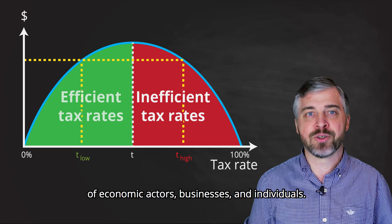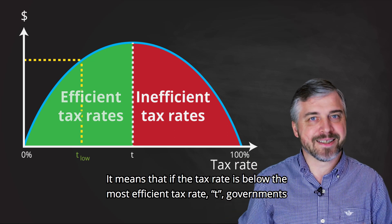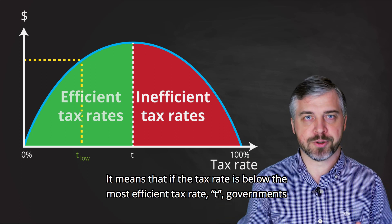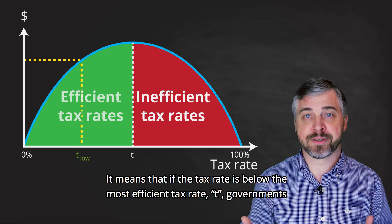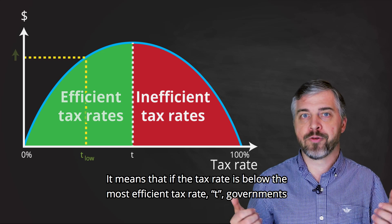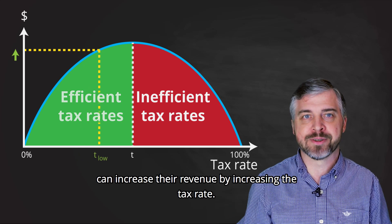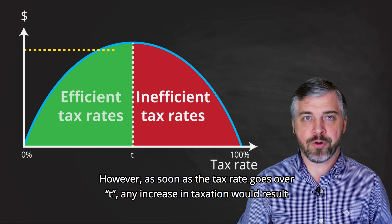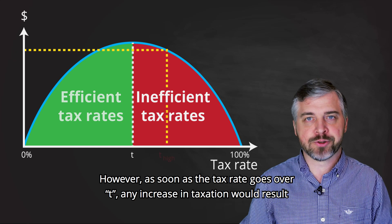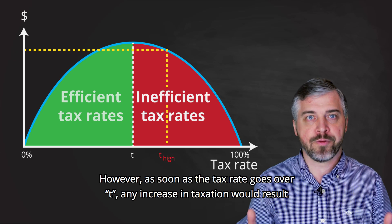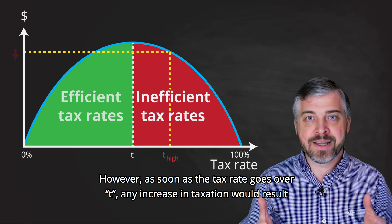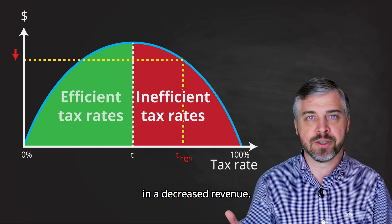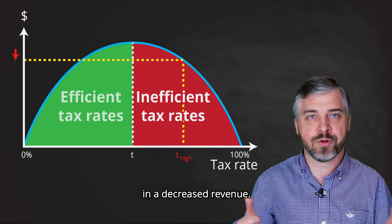businesses and individuals. It means that if the tax rate is below the most efficient tax rate T, governments can increase their revenue by increasing the tax rate. However, as soon as the tax rate goes over T, any increase in taxation would result in a decreased revenue.